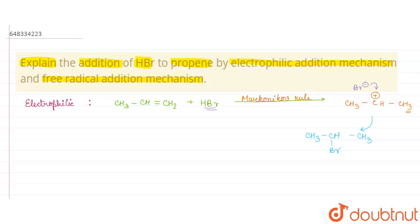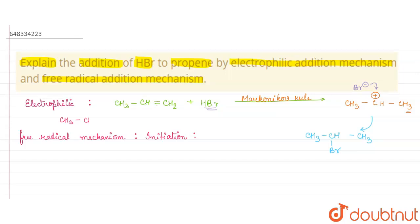Now in the free radical mechanism, the product formed will be different. For better understanding, in the free radical mechanism there are three major steps. The first is the initiation step. In initiation, we use an organic peroxide. So we write: CH₃CH=CH₂ plus HBr in the presence of peroxide.